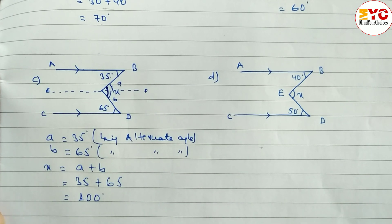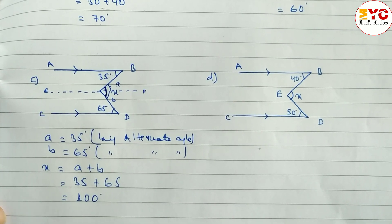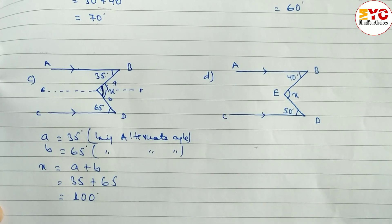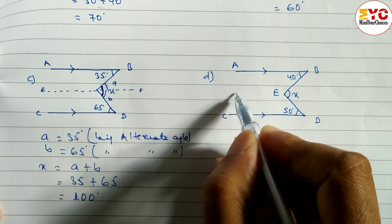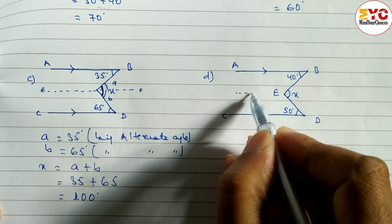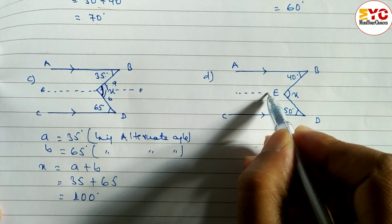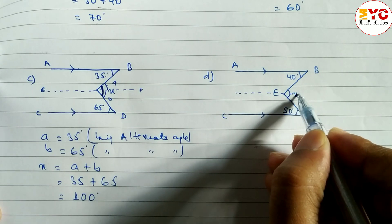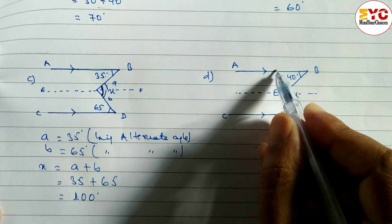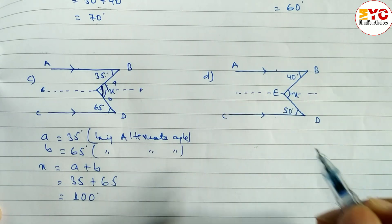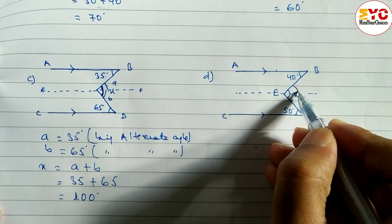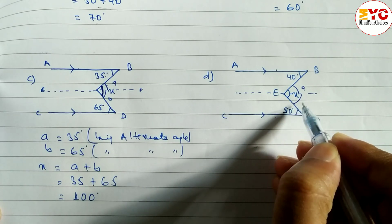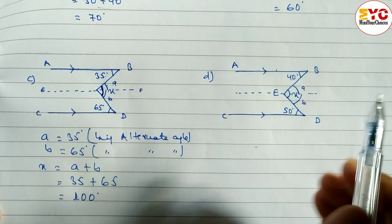Hope you understand question number c. Now look at question number d. Here also we have to draw one parallel line parallel to AB and CD. So here we write down A for the upper part and B for the downside.